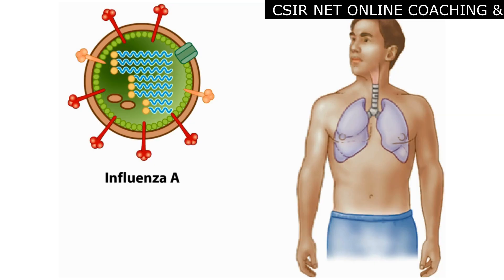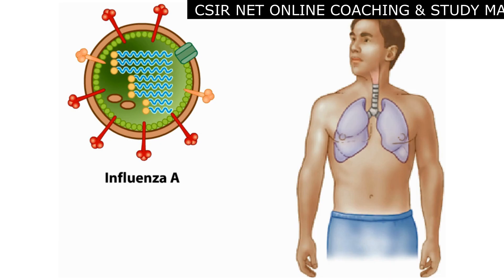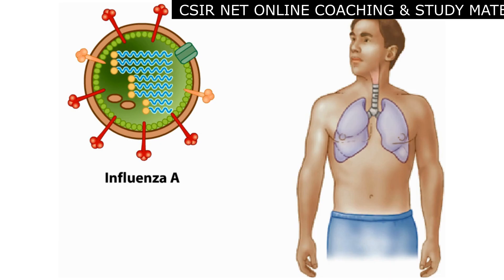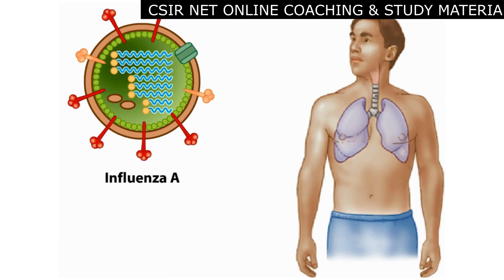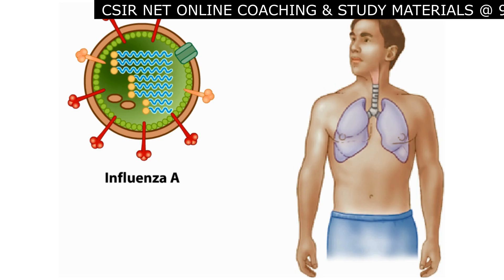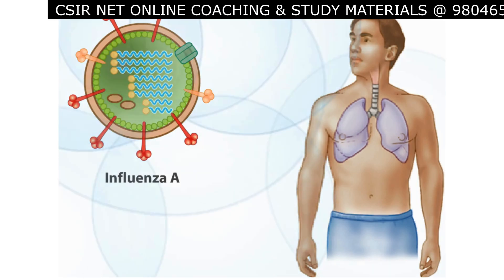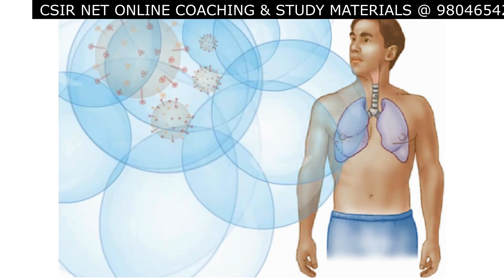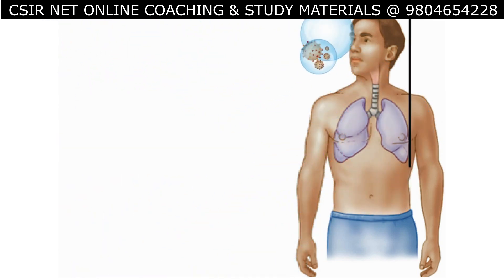Influenza A is one of the most common life-threatening viruses in the United States, each year infecting approximately 10% of the US population and causing about 20,000 deaths. Influenza is normally transmitted by droplets or aerosols from the sneeze or cough of a nearby infected person.